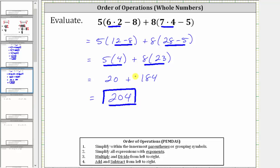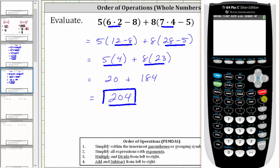And let's go ahead and verify this with a calculator. To do this, we enter the original expression just as it's given. So we have five, open parenthesis, six times two, minus eight, close parenthesis, plus eight, open parenthesis, seven times four, minus five, close parenthesis and enter, which does verify we did evaluate the expression correctly. I hope you found this helpful.